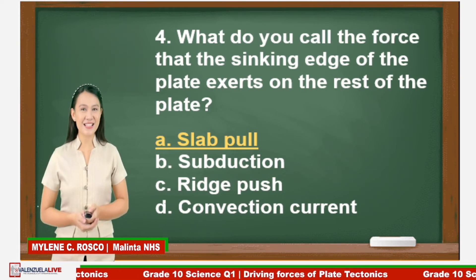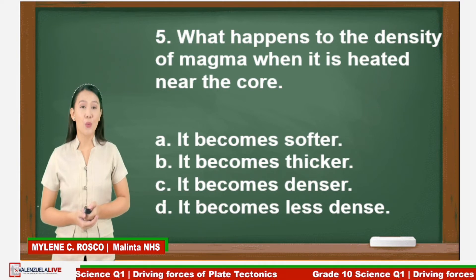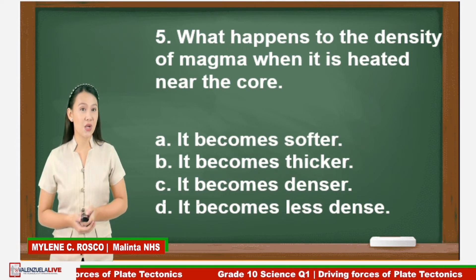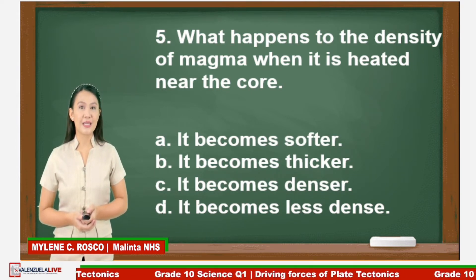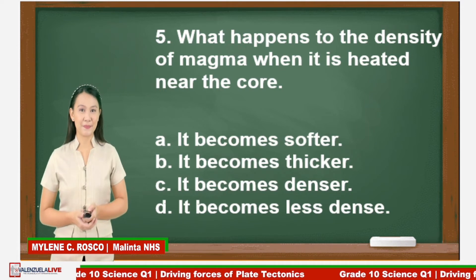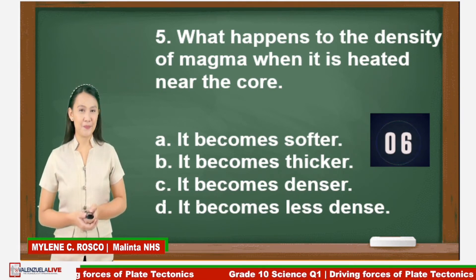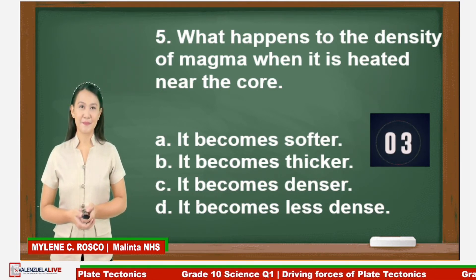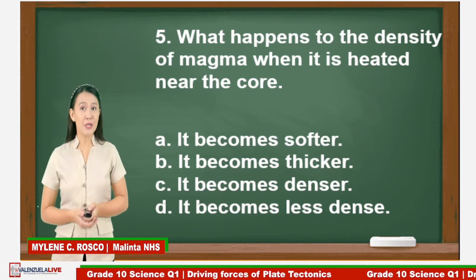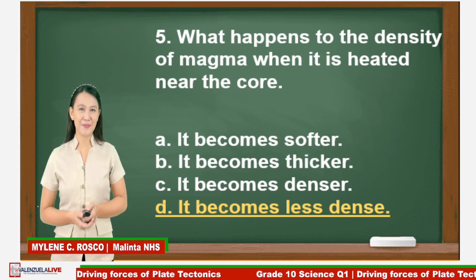Question number five: What happens to the density of magma when it is heated near the core? A. It becomes softer. B. It becomes thicker. C. It becomes denser. D. It becomes less dense. You have 10 seconds — go. Time is up. If you answered letter D, it becomes less dense, you are correct. Great job, learners!